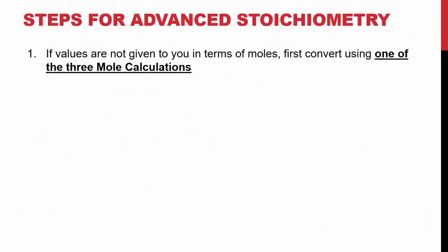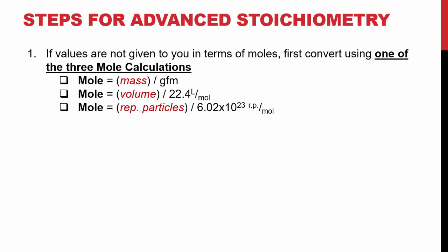So the very first step you have to do, if the values are not given to you in terms of moles, is to first convert using one of the three mole calculations. So we could either take mass over the GFM to find moles, we could take the volume over 22.4 liters to find the moles, or we could take the amount of particles divided by Avogadro's number (6.02×10²³/mol) to figure out how many moles we have.